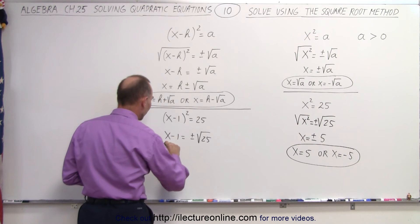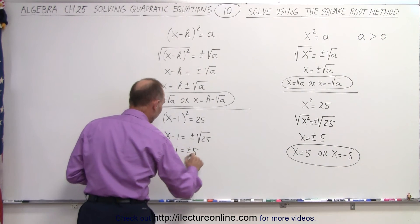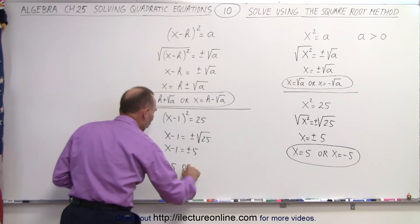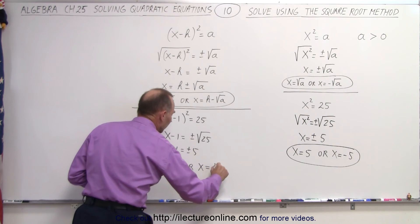The square root of 25 is 5. So we have x - 1 = ±5, which means that x = 1 + 5 or x = 1 - 5.